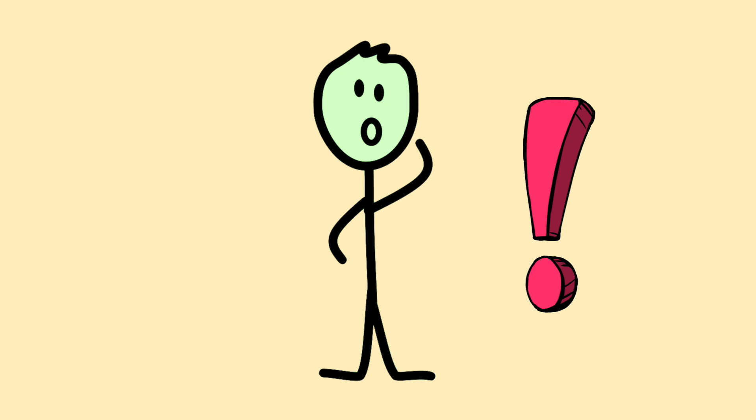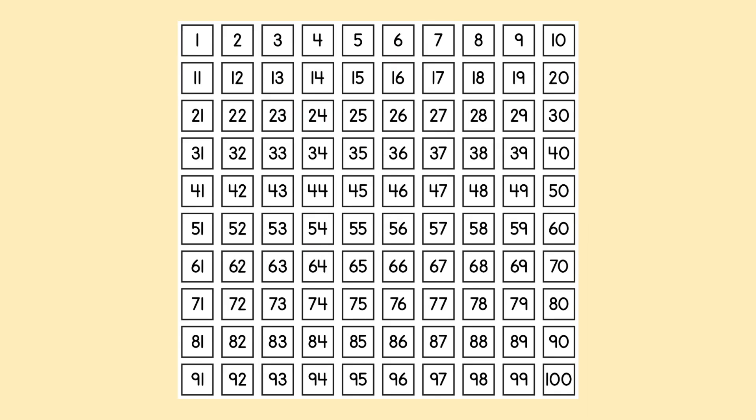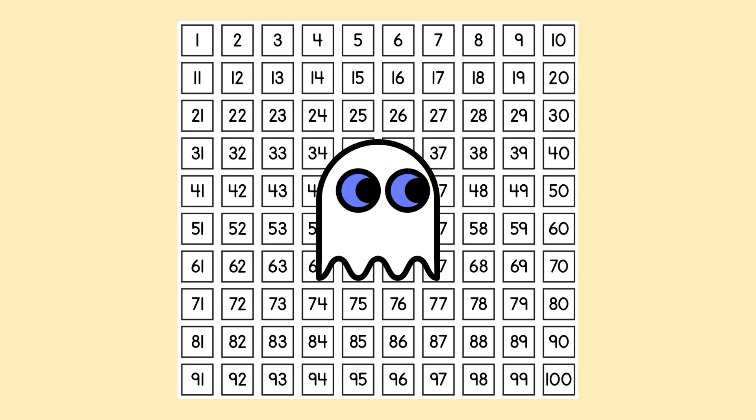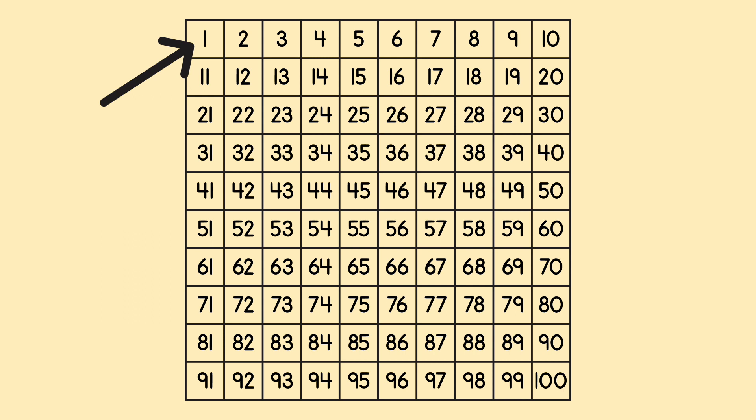But then he remembered that he had a tool that helped with addition and subtraction, a hundreds chart. He pulled out his hundreds chart and took a look. It looked like a box, and the box was divided into 100 little boxes numbered 1 through 100.